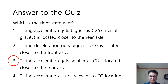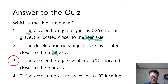Let's find the answer to the quiz. Statement 1 is wrong — tilting acceleration gets bigger as CG is located closer to the front axle, not the rear. Statement 2 is wrong — tilting acceleration gets bigger as CG is located closer to the rear axle, not the front. Statement 4 is wrong — tilting acceleration is directly relevant to CG location. Therefore, the answer is number 3.